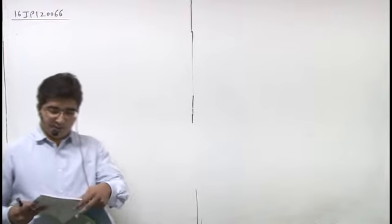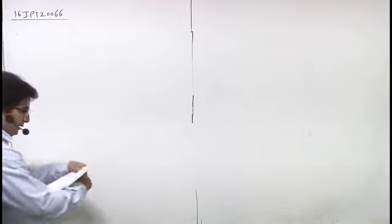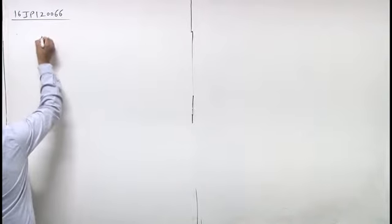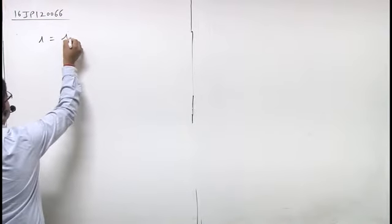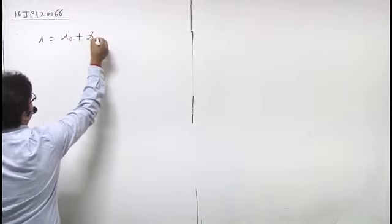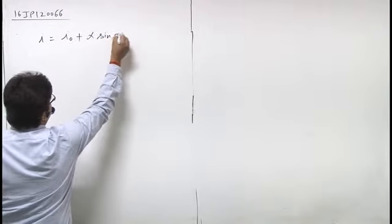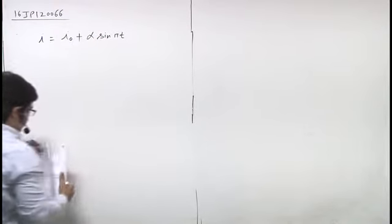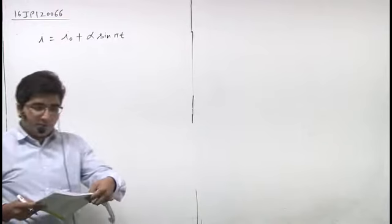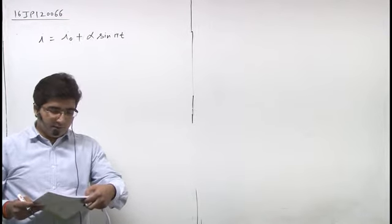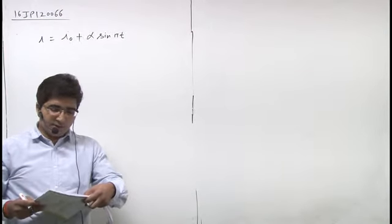Again, the question. It is given current i equals i₀ plus α sin πt. Values of i₀ and α are given. Find the charge crossed through a section of wire in 3 seconds.